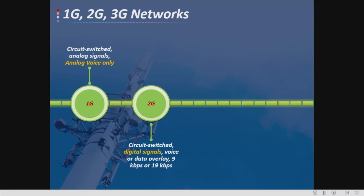1G is analog, such as AMPS, which uses FDMA to divide the bandwidth into specific frequencies and assign them to individual cells.